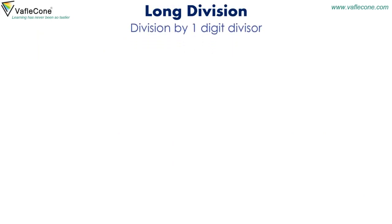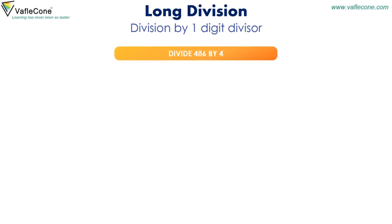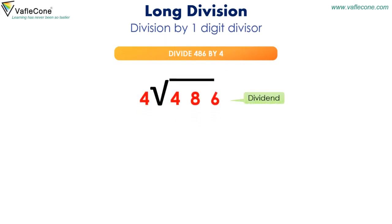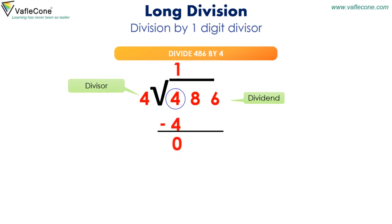Division by one-digit divisor. Divide 486 by 4. Here the dividend is 486 and the divisor is 4. Now we start at the 100's position. So 4 into 1 is equal to 4, and 4 minus 4 is equal to 0, and we move to the 10's position.